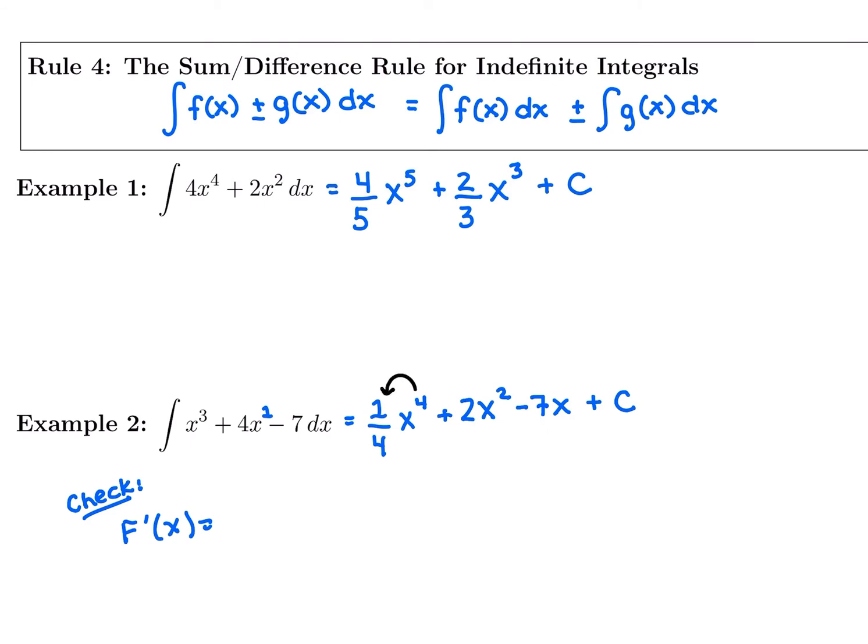So if we check our answer, we bring down the power 1 4th times 4. You could use a calculator. That's just going to be 1, x to the 3rd. Taking the derivative again, the derivative of 2x squared is 4x. So so far we're doing good. We got x cubed. We got 4x. Last term, the derivative of negative 7x is negative 7. So we got all three pieces of our antiderivative correct. Because when we take the derivative of them, we get back to what was on the inside of the integrand. So we did this correctly. And this would be my final answer.